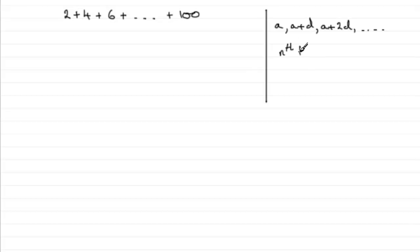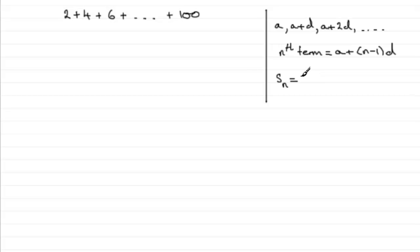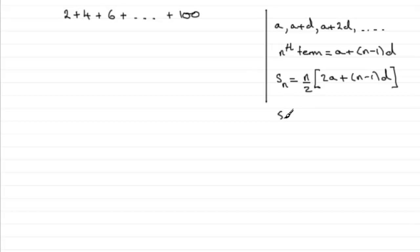You can see that the nth term is always going to be a plus (n minus 1) times d, where n is the number of terms. It can also be shown — I've got a proof on my website — that the sum of the first n terms is given by n over 2, multiplied by twice the first term plus (n minus 1)d.